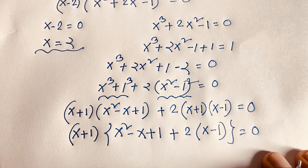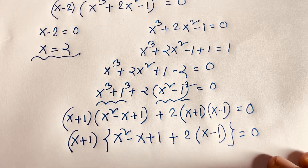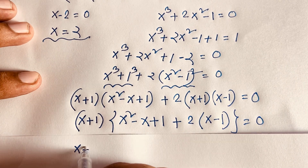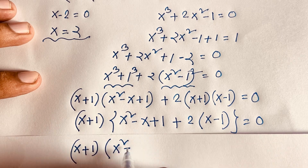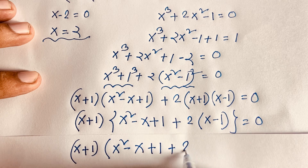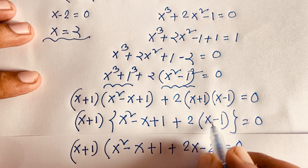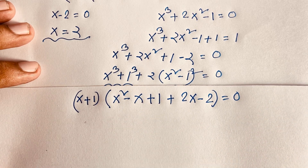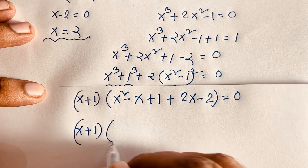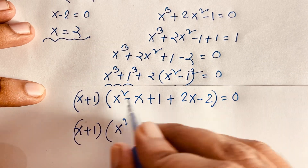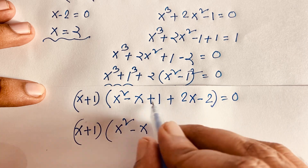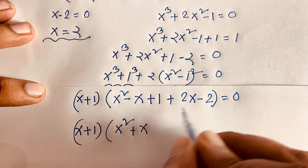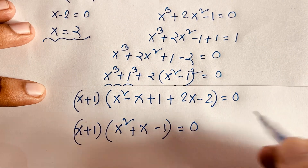Multiplying through by 2, we get (x + 1)(x² - x + 1 + 2x - 2) = 0. Simplifying inside: 2x - x = x, and 1 - 2 = -1, so this becomes (x + 1)(x² + x - 1) = 0.